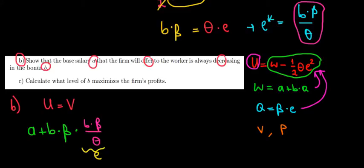Now minus the cost of effort which is minus one-half times theta times the effort level to the power of 2, which is gonna be B times beta over theta to the power 2. So when we raise everything to the power 2 we have every term to the power of 2. All of this must be equal to the alternative utility of V.